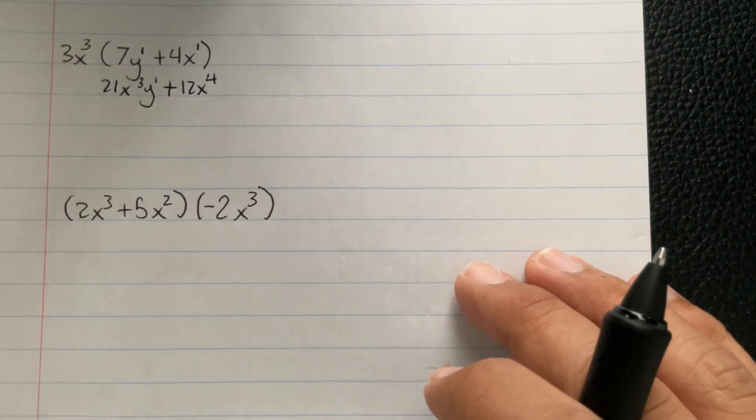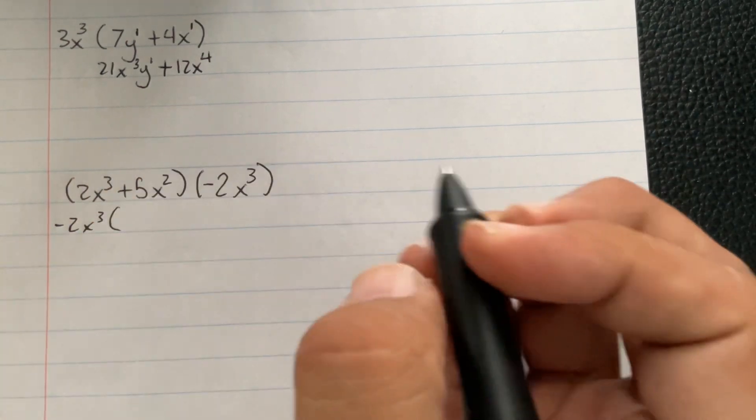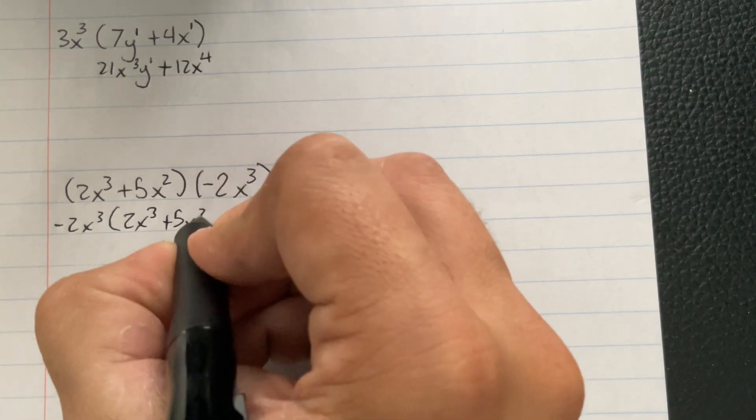Now our focus is going to be that. So this is written a little bit out of order. I'm just going to fix it. Negative 2x³, times 2x³, plus 5x².